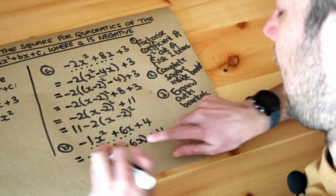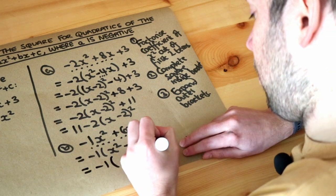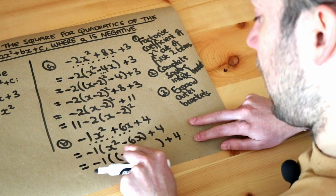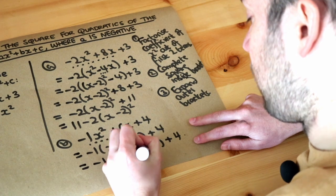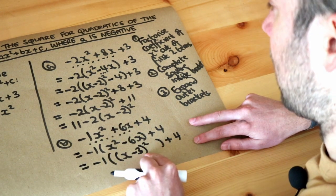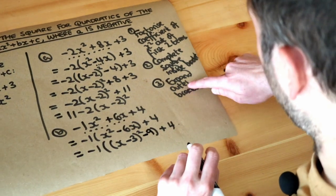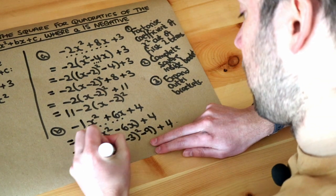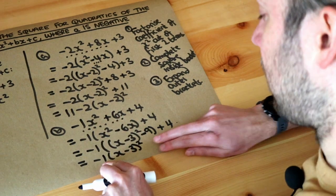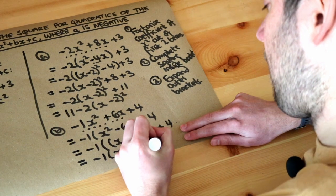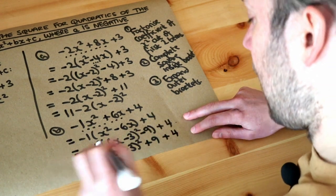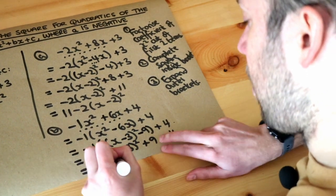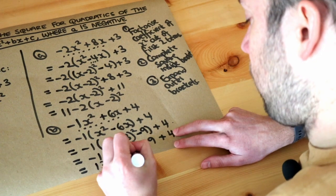Step 2: we complete the square inside the bracket. We write (x minus 3) squared — halving the minus 6 gives minus 3. Minus 3 squared is 9, so we subtract 9. Step 3: expand the outer bracket. Minus 1 times (x minus 3) squared gives minus 1(x minus 3) squared. Minus 1 times minus 9 is plus 9, and we still have the plus 4. So 9 plus 4 is 13. Putting the positive term first: 13 minus (x minus 3) squared is the final answer.